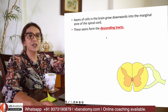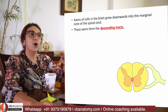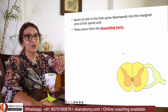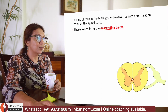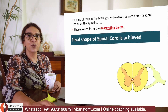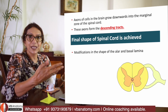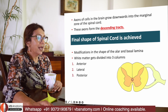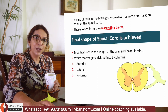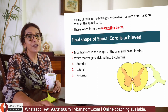The marginal zone gets packed with ascending tracts (axons of posterior grey horn neurons or dorsal root ganglion neurons) and descending tracts (axons coming from the cortex downwards). The final shape of the spinal cord is achieved with modification of the alar and basal laminae to look like the wedge-shaped grey horns, and the white matter is divided into anterior, lateral, and posterior funiculi. The spinal cord begins to resemble the spinal cord we know.